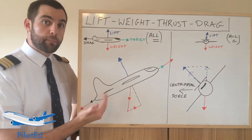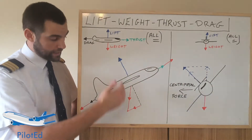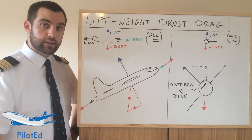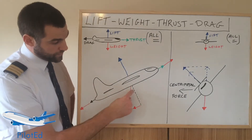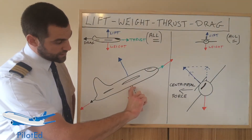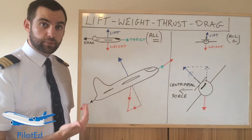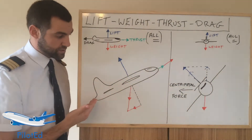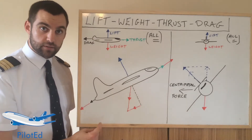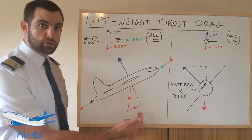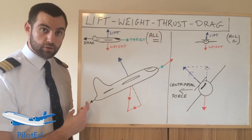Now what happens if we pitch up to climb? As we pitch up, remember the weight we cannot change — that is always going to be straight down towards the centre of the earth. There's always going to be a vertical component to that weight. As we pitch up, you can see that weight component is now tilted slightly. That weight has now divided into two vectors, and we now have a backward component to that weight.